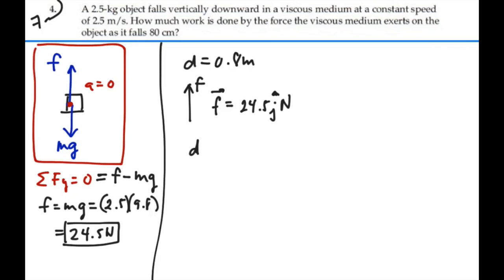And our displacement is actually going down like this. So as a vector, our displacement is equal to a negative 0.8j meters.